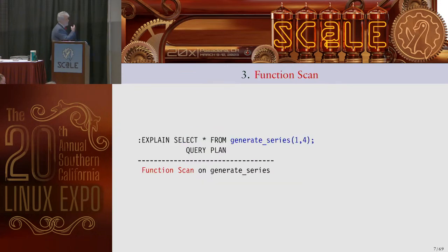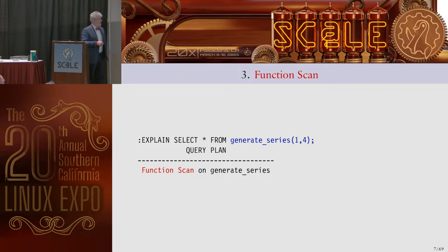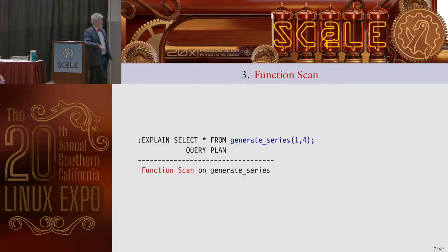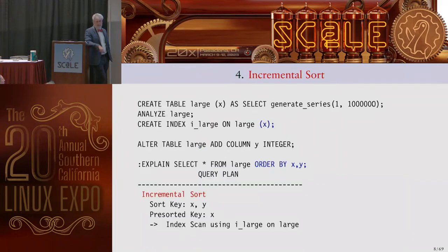Function scan: this is a case where you have a function in a FROM clause. The function call in the FROM clause is the cause, and you get a function scan — we're just scanning over the results of a function.